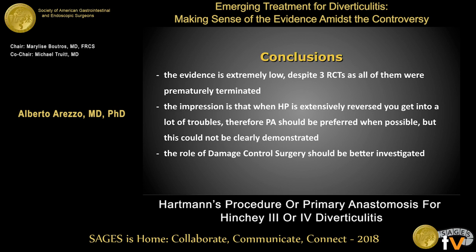The final conclusions are that the evidence is extremely low despite three randomized controlled trials, as all were prematurely terminated. The impression is that when Hartmann procedure is extensively reversed, you get into a lot of troubles, and therefore primary anastomosis should be preferred when possible — though this could not be clearly demonstrated. The role of damage control surgery should probably be better investigated in the near future. Thank you very much.